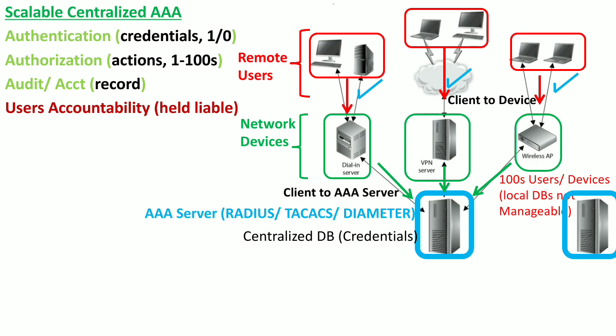There can be multiple AAA technologies or servers deployed in the same network. For example, we may use the TACACS+ server for remote login, because TACACS+ is more granular — it records and authorizes each separate command of our admin. Whereas we may use RADIUS for other normal VPN users, because there are less overheads with RADIUS.